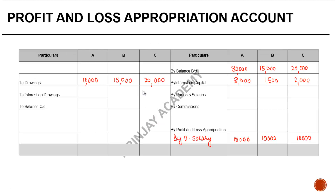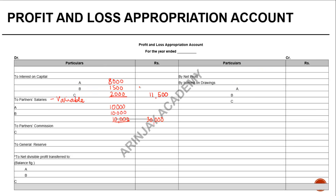Interest on drawings is at 12%. We don't have an indication as to whether this is monthly or annual, so we apply flat 12% to all drawings. That gives $1,200 for A, $1,800 for B, and $2,400 for C. This is income for the firm, so we credit $1,200, $1,800, and $2,400 to the profit and loss appropriation account, totalling $5,400.